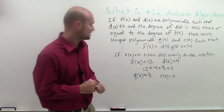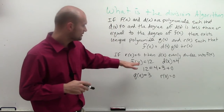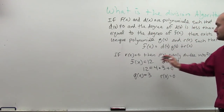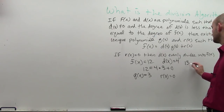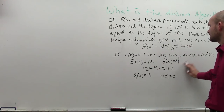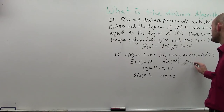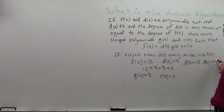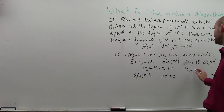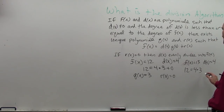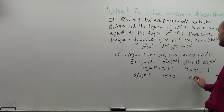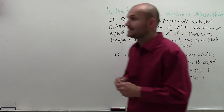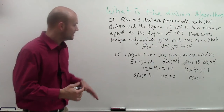Now one last thing I just want to look at: let's say that now I have f of x equals 13. If f of x equals 13 and d of x still equals 4, then we'll have 12 equals 4 times 3, but now our remainder is going to be 1, so r of x equals 1. So we can say that it's not going to divide evenly into it.